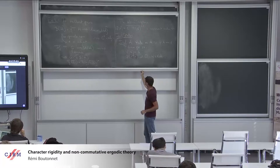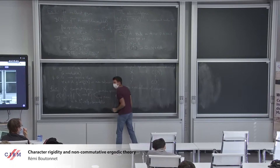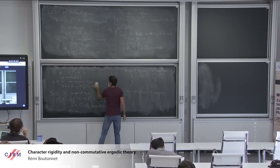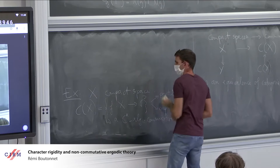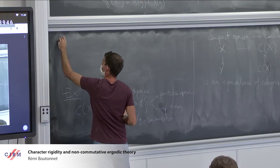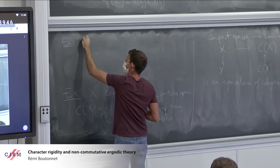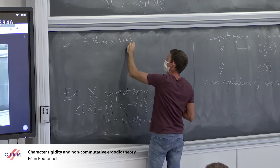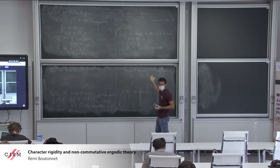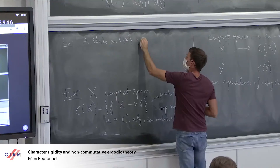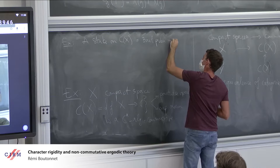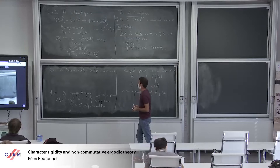Some examples: a state on C(X), by the Riesz representation theorem, is really a Borel probability measure on X. So you have this dictionary — if you have a measure, you have the integration state with respect to this measure, and that's all you get.